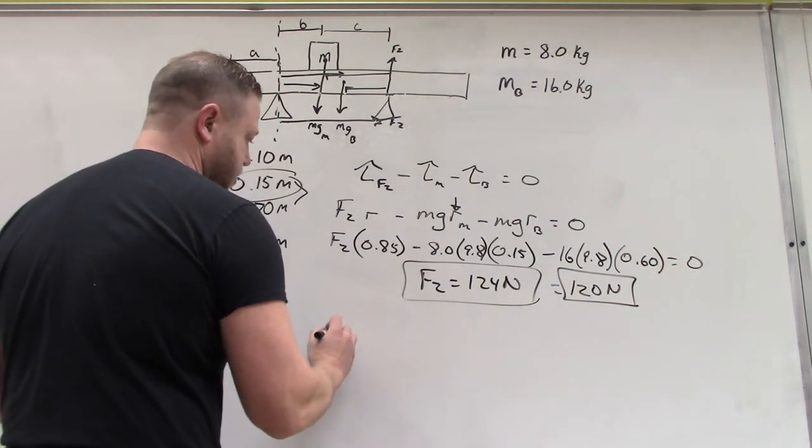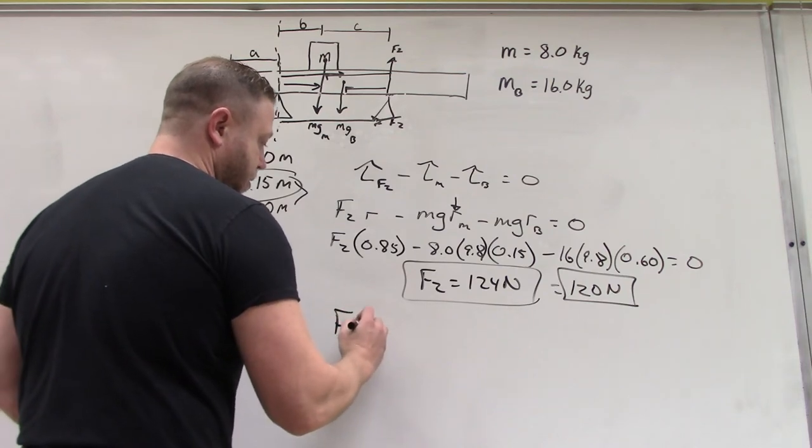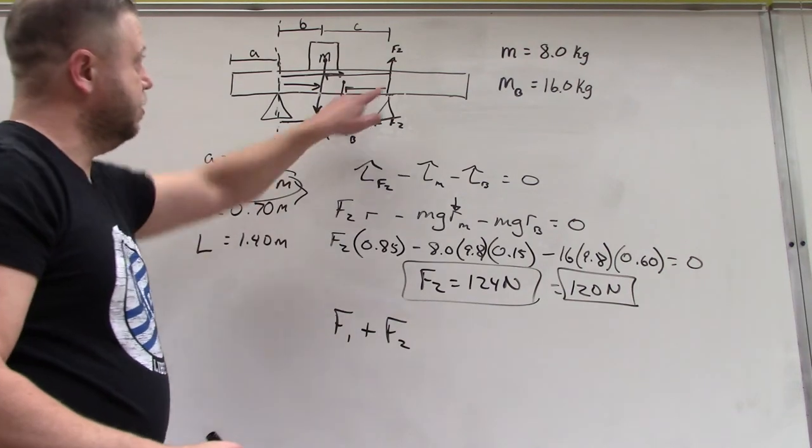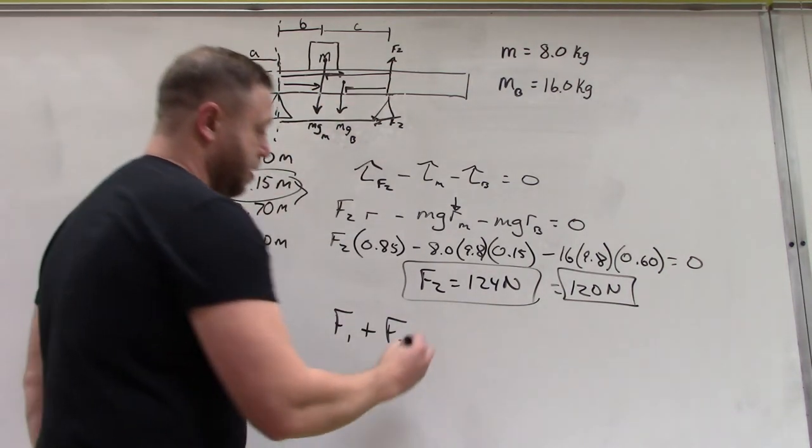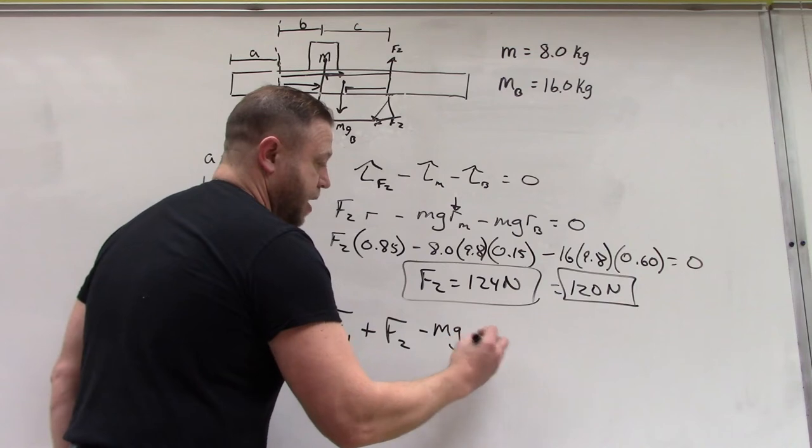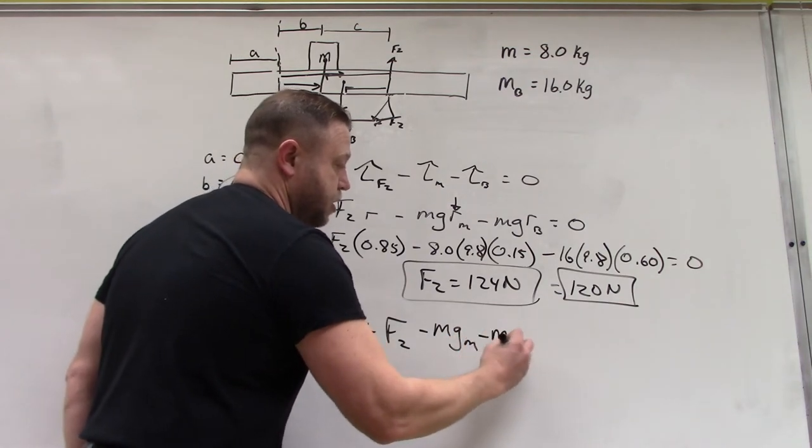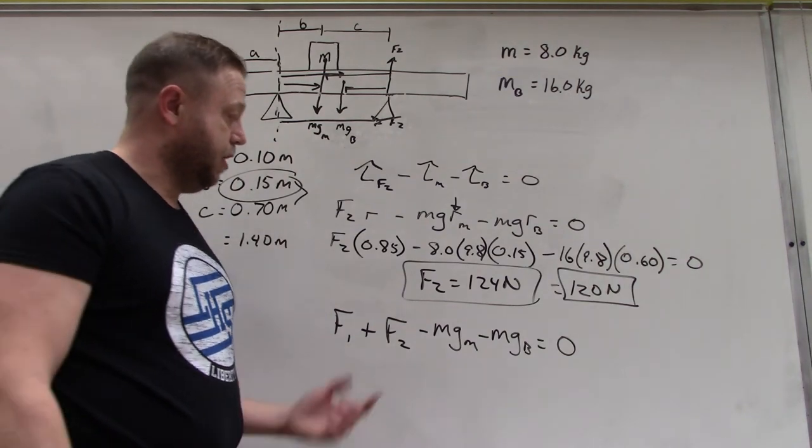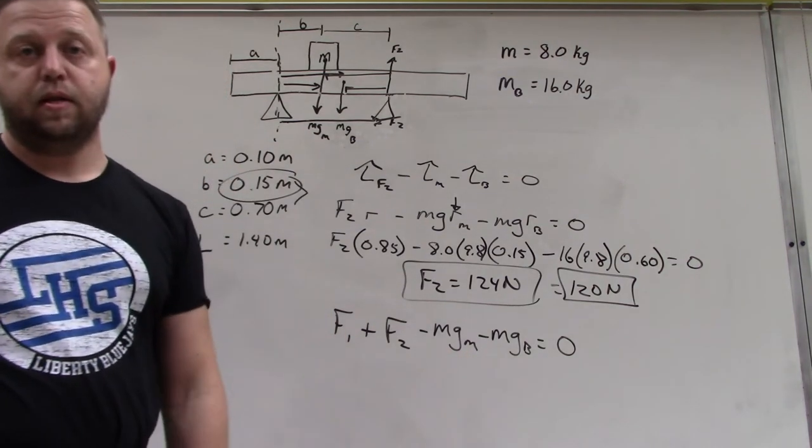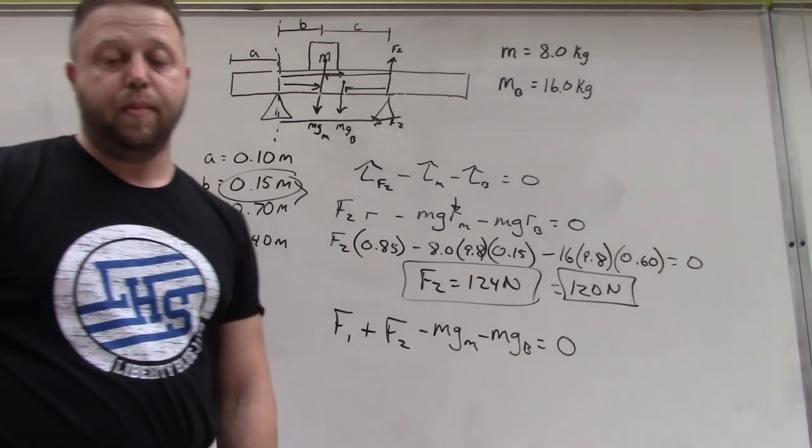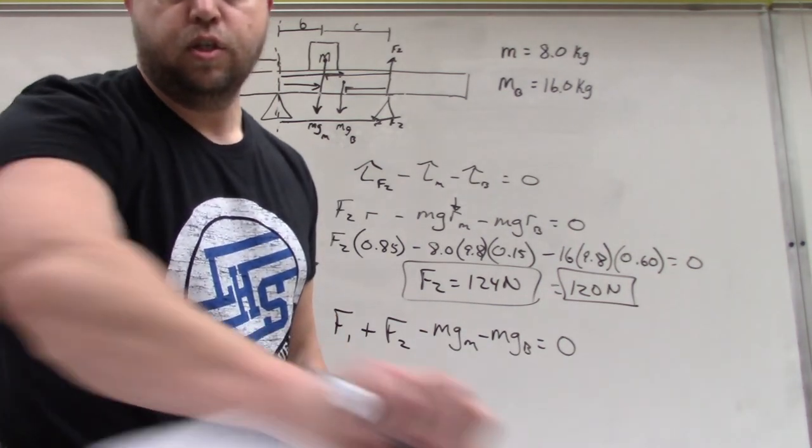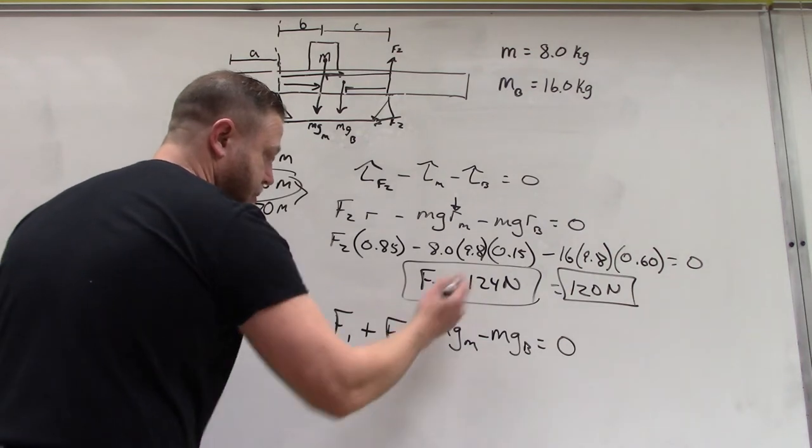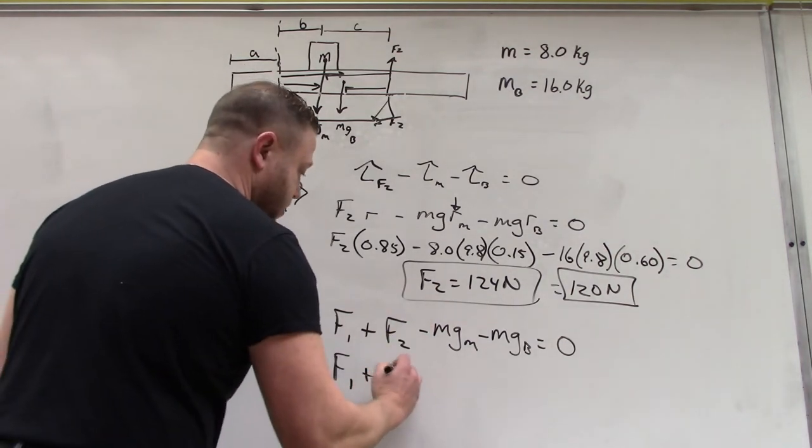Now I have our two forces up: force fulcrum one and force fulcrum two. Those are my two upward arrows, minus mg for the mass, minus mg for the beam, and all of this sums up to equal zero. The two forces up minus the two forces down are going to be balanced. Once I plug those in and solve for F1: F1 plus 124 newtons.